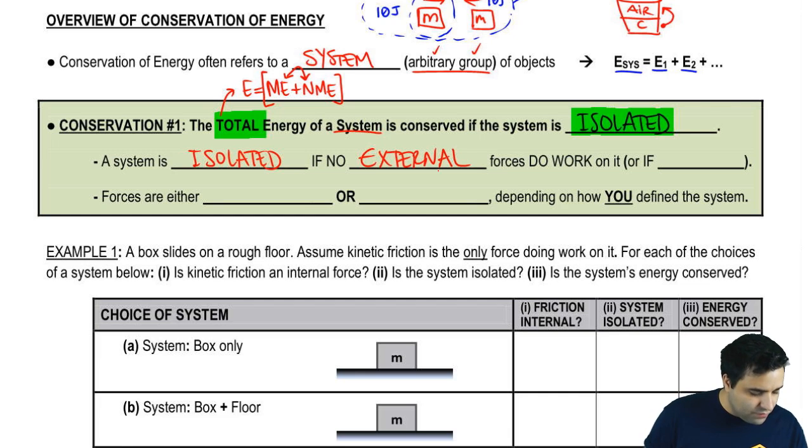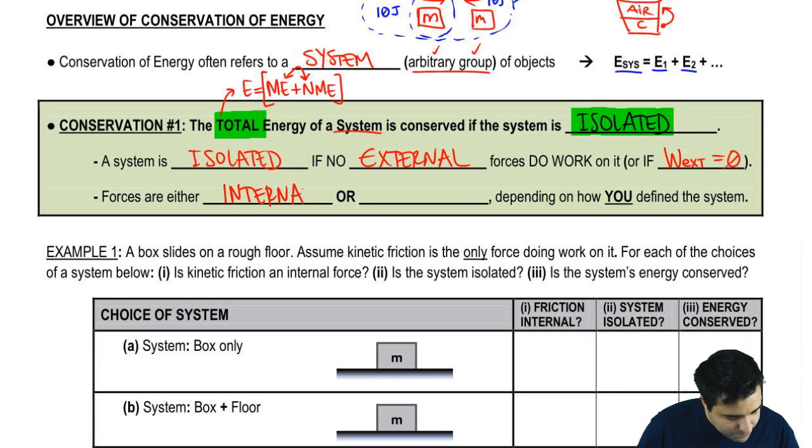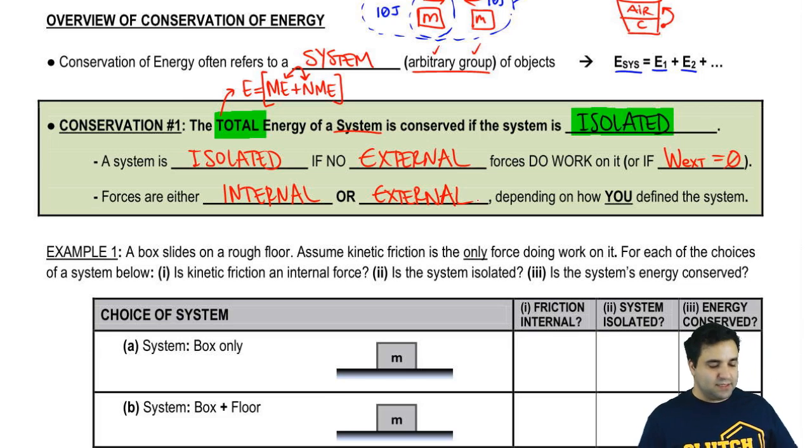But obviously you have to also know what is an external force. So no external forces doing work on the object. So you could have external forces, but if you have one, there has to be another one to cancel it. There is no external work on the system. So the work done by external forces equals zero. No work done by external forces. Forces can be either internal or external, depending on how you determine the system.